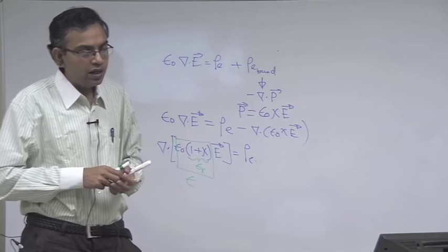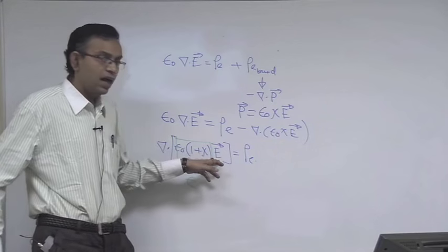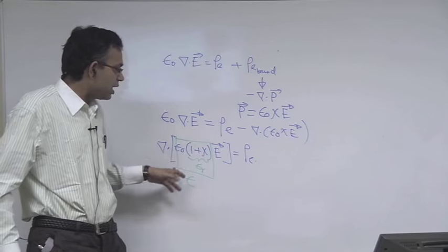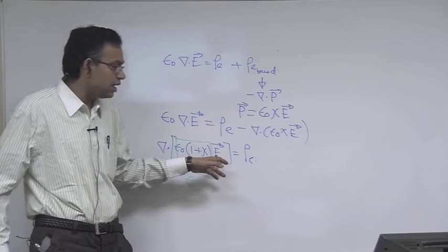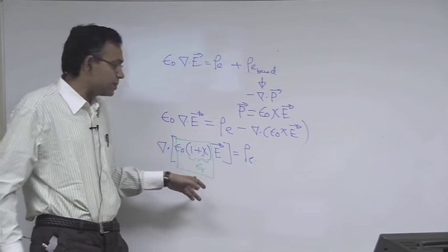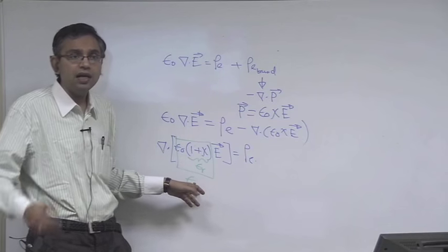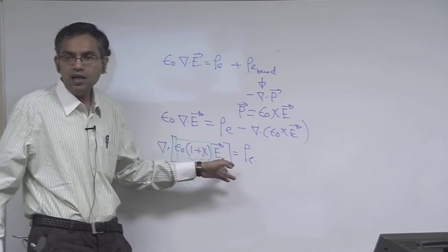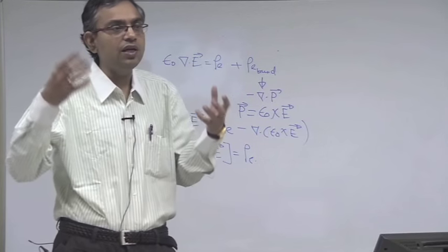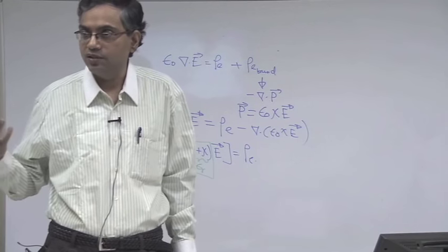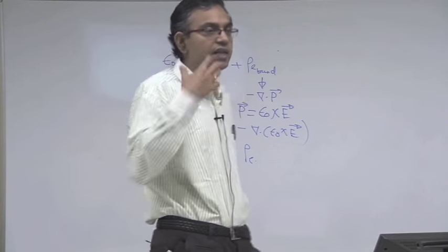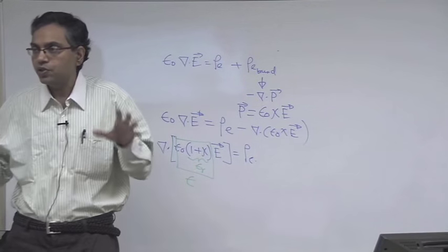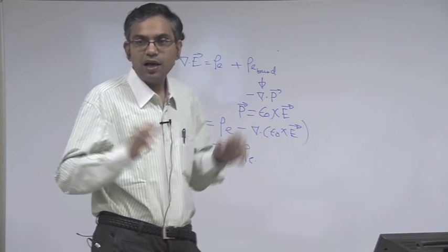Since E = -grad(psi), we get div·(epsilon * grad(psi)) = -rho_e. If epsilon is constant, this reduces to del^2(psi) = -rho_e / epsilon. In mathematics, an equation of the form del^2(phi) = f is called the Poisson equation; if the right-hand side is zero it is called the Laplace equation. These are very famous forms of partial differential equations in applied mathematics and engineering.